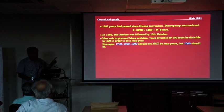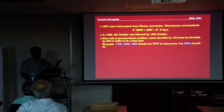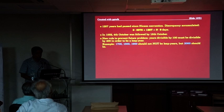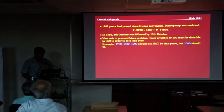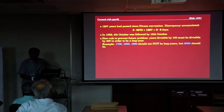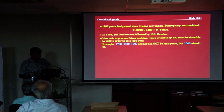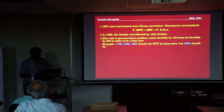So for example, 1700, 1800, 1900 should not be leap years. But 2000 will be a leap year, and 1600 will also be a leap year.